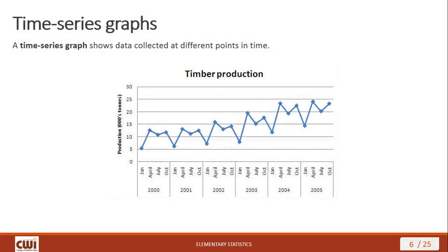Next up we have time series graphs. A time series graph shows data collected at different points in time. This particular example shows timber production for different quarters of succeeding years — January representing Q1 of 2000, April Q2, July Q3, October Q4 — with production measured in thousands of tonnes. The graph goes up and down following the data points, arranged in order of time — hence the name time series.